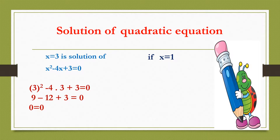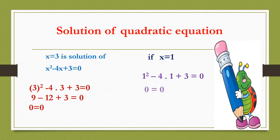Also, if we substitute x equal to 1, the equation is again satisfied because 1 square minus 4 into 1 plus 3 is equal to 0, which implies 0 is equal to 0. So x equal to 1 is another root of the equation.